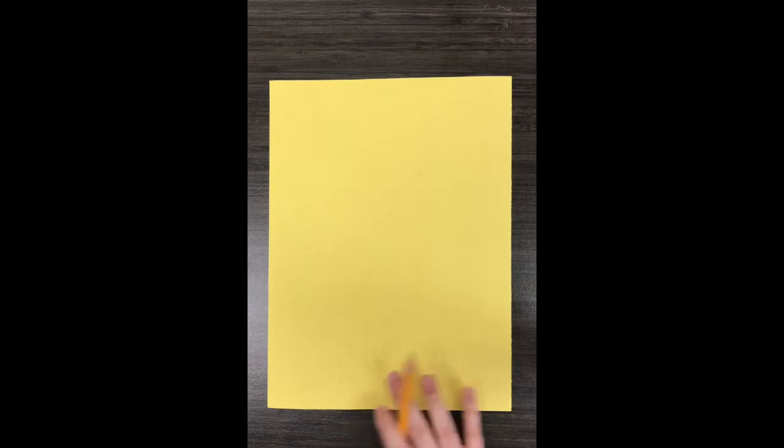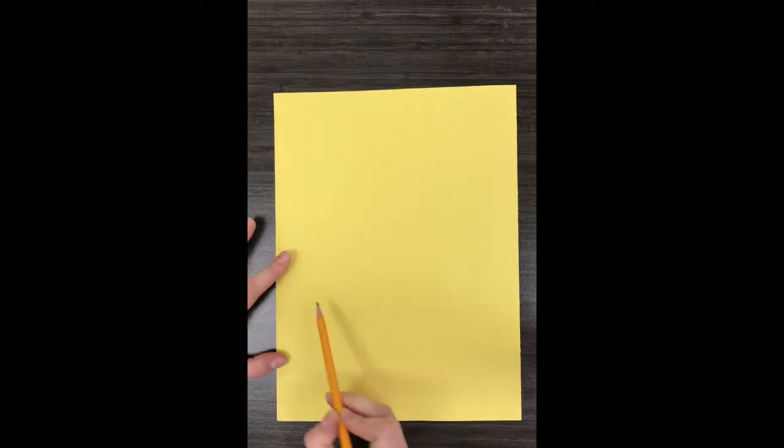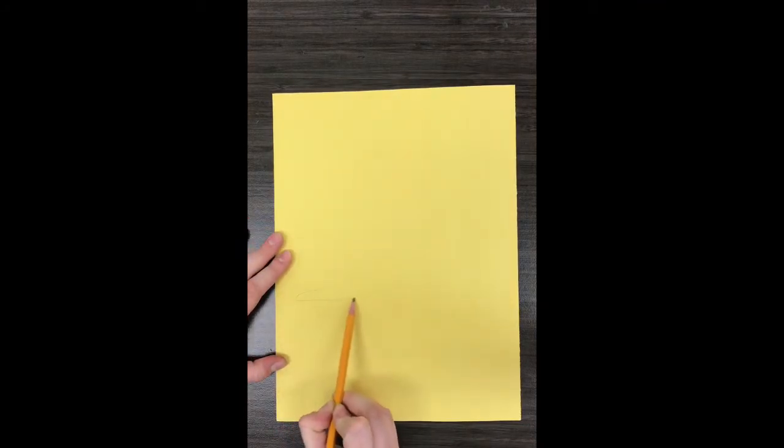The first thing is you're going to get a piece of colored construction paper. I recommend choosing a color that's lighter, so yellow, orange, red, or pink would all be good ones.